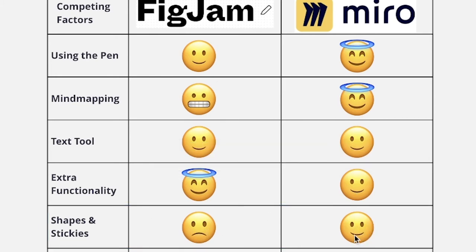For shapes and stickies, Miro has tons of different shapes while FigJam just has sticky notes from what I can see. I'm going to give FigJam a two on stickies and shapes, and Miro is going to get a four. FigJam just doesn't hold up against Miro — Miro's got a lot more options when it comes to sticky notes. Keep in mind, FigJam is in beta, so they may improve on this.